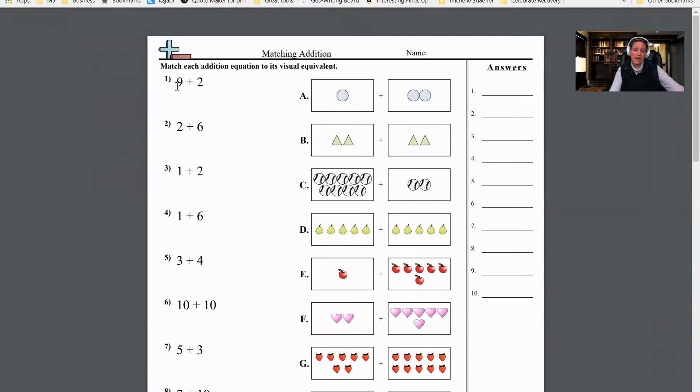You can use these worksheets by having the child actually annotate on the screen. There is a button - there's going to be a tool at the very top of your Zoom when you're sharing the screen that will say Annotate. The same thing will happen for the child as well on the other side.